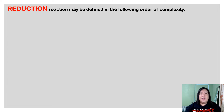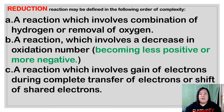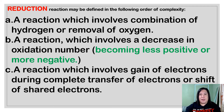While reduction can be classified in the following order of complexity. Number one, a reaction which involves combination of hydrogen or removal of oxygen. Letter B, a reaction which involves a decrease in oxidation number, becoming less positive or more negative. And letter C, a reaction which involves gain of electrons during the complete transfer of electrons.